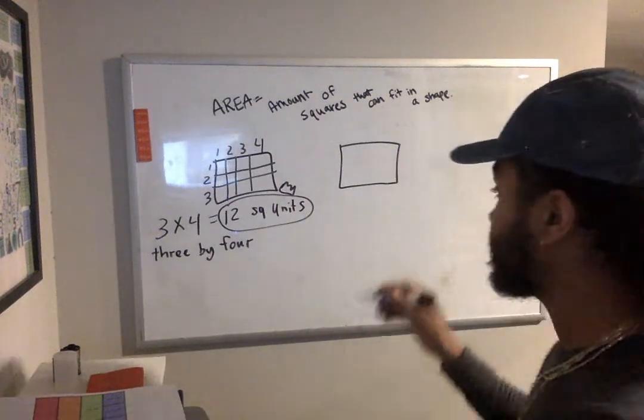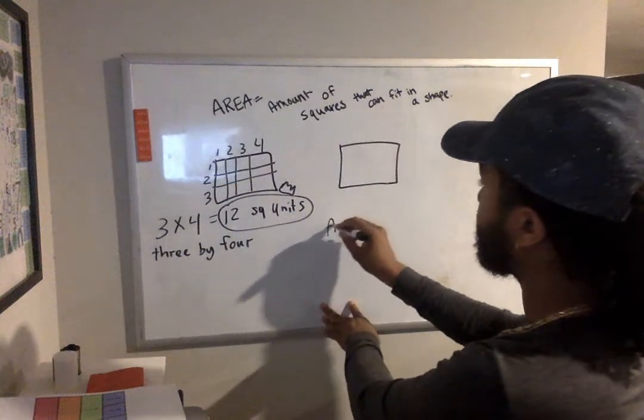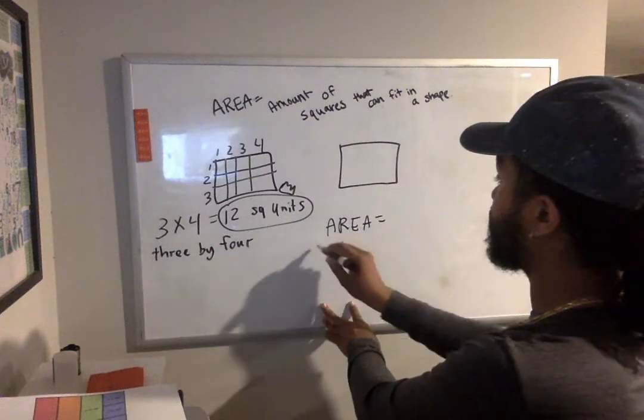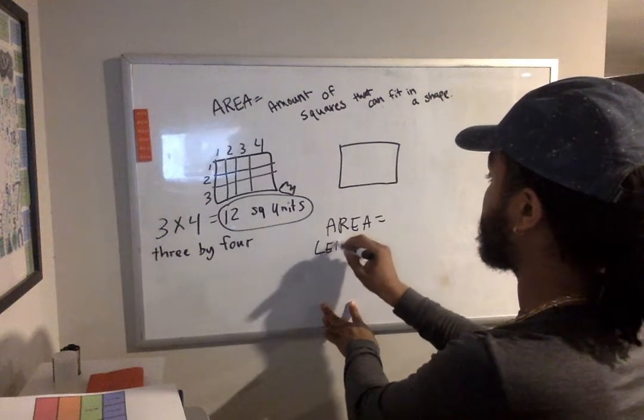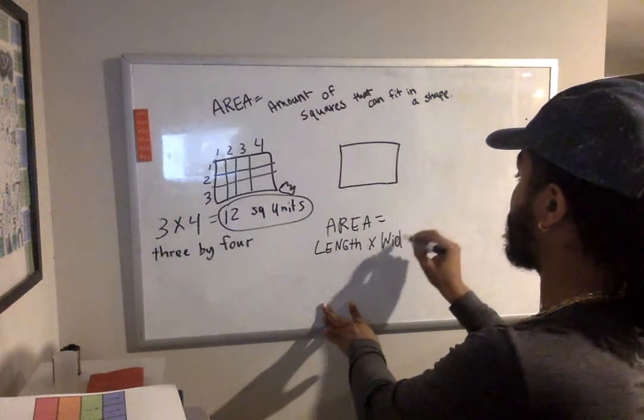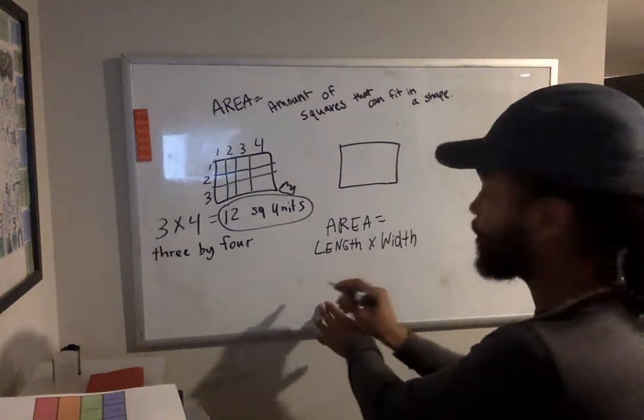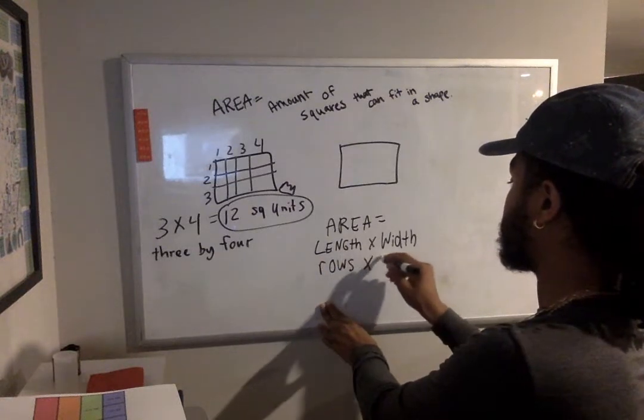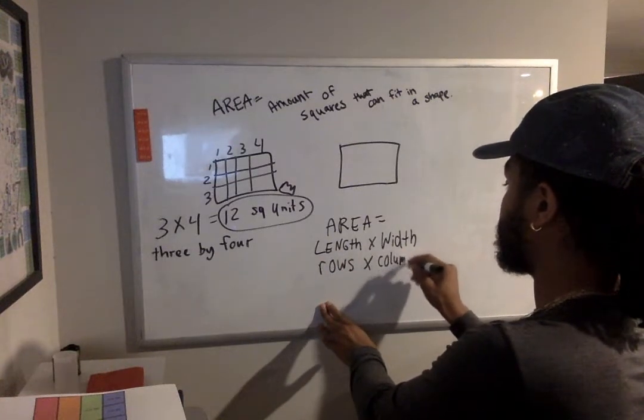But you might know the length and the width. And this is where that formula comes together. So area equals length times width, which is the same as rows times columns. Same thing.